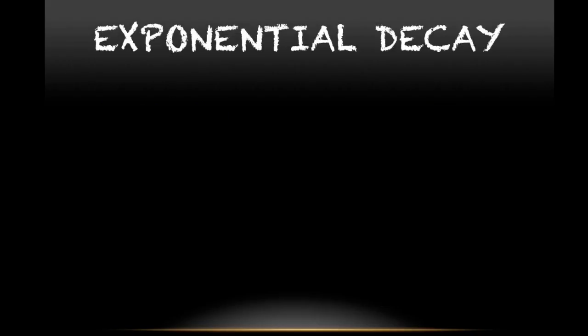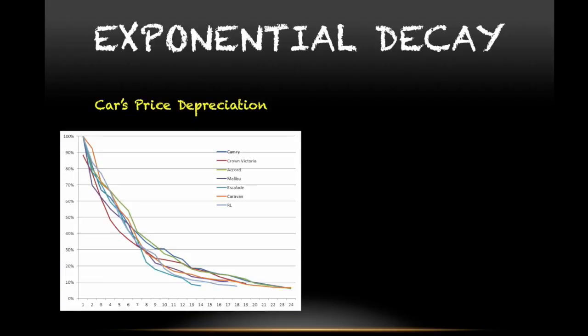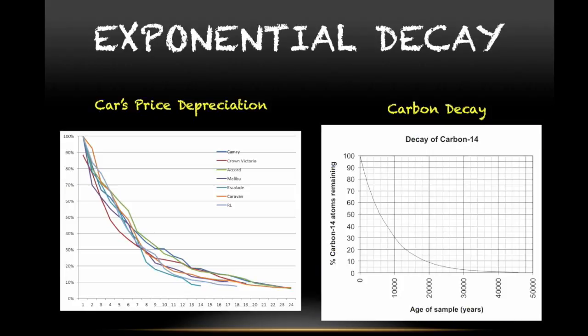Exponential decay is represented by a graph that starts with big decreases, but each time the decreases become smaller and smaller. Examples of this could be a car's price depreciation, where we start with very big decreases and then the decreases become smaller and smaller. Same we see in the decay of materials, for example, carbon decay. We start with very large decreases and then they become smaller and smaller.